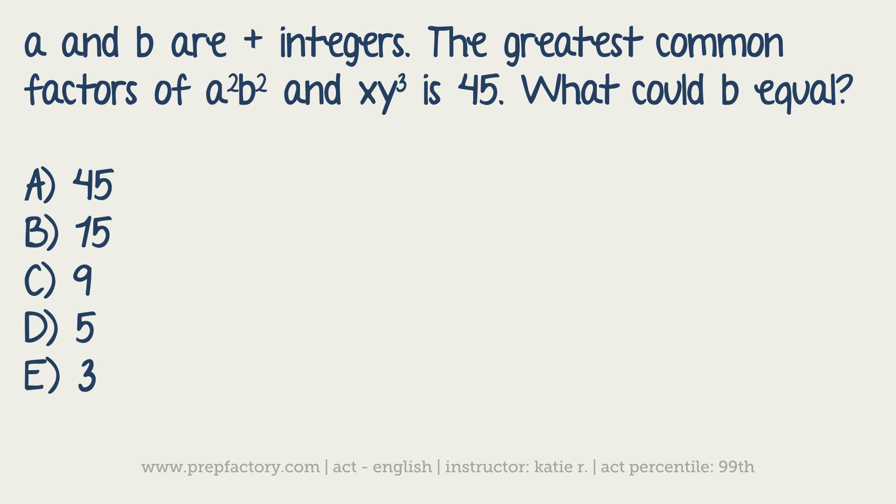I know that both of them have an a in common, and both of them have at least two b's. So ab² is the greatest common factor. So you now know that ab² is equal to 45.